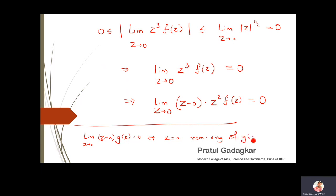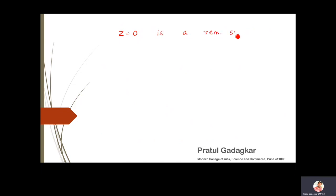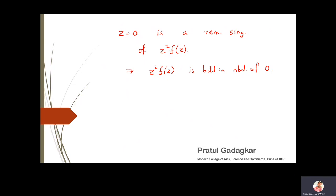In this problem, z²f(z) is playing the role of g(z). So we conclude that z = 0 is a removable singularity of z²f(z). If a function has a removable singularity at a point, it means the function is bounded in the neighborhood of zero.